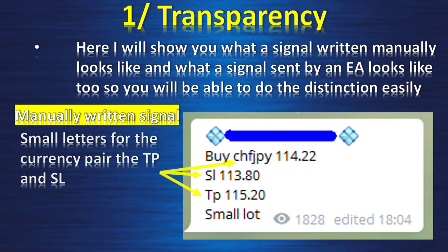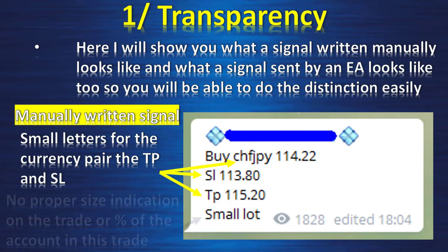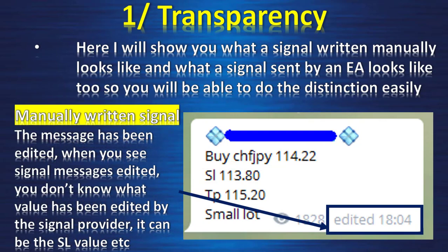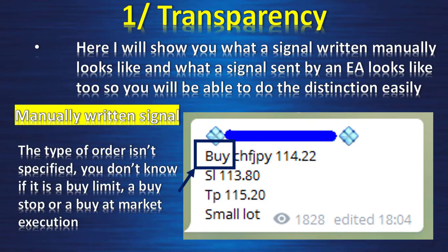This is a manually written signal. Notice the small letters for the currency pairs, target profit, and stop loss. There is no proper size indication or percentage of the account on the trade. Also, this message has been edited — when you see signal messages edited, you don't know what value was changed. It could be the stop loss, which means the signal may have triggered the stop loss and the provider moved it afterward. Also, the type of order isn't specified — you don't know if it's a buy limit, buy stop, or buy at market execution.